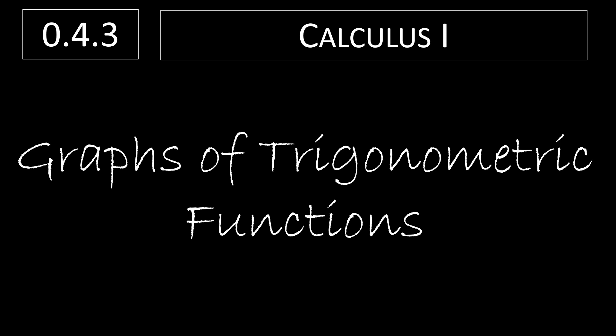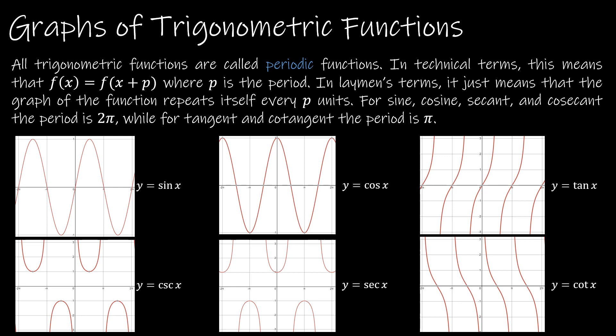This is our last video for chapter P of your textbook, so this is just going to review the graphs of trigonometric functions. The trigonometric functions are all called periodic functions, because technically it means that f of x is equal to f of x plus p, where p is the period. Non-technically, it means that the period is how long it takes for the graph to repeat itself.